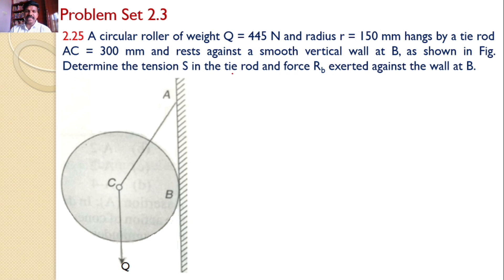Determine the tension S in the tie rod and force RB exerted against the wall at B. That means a circular roller of weight 445 newtons is hanged by a string AC and also it is supported at B. Our interest is to find the tensile force in AC and the reaction force developed at B.